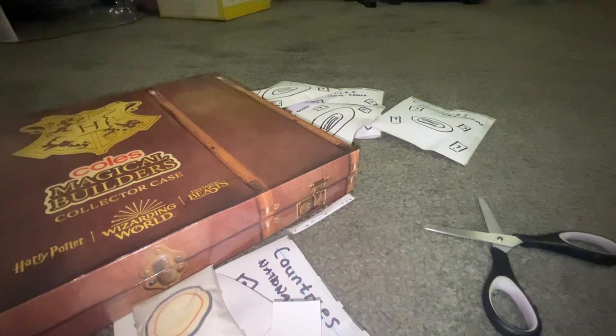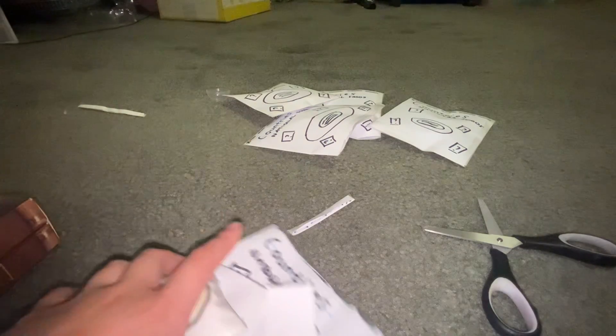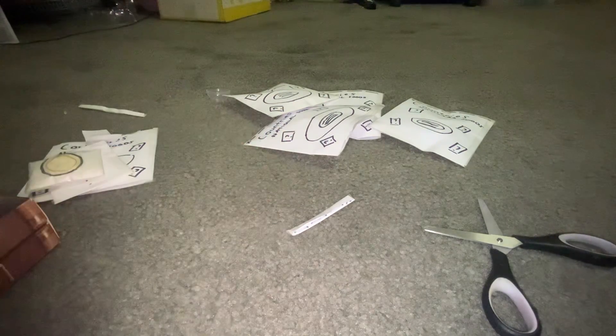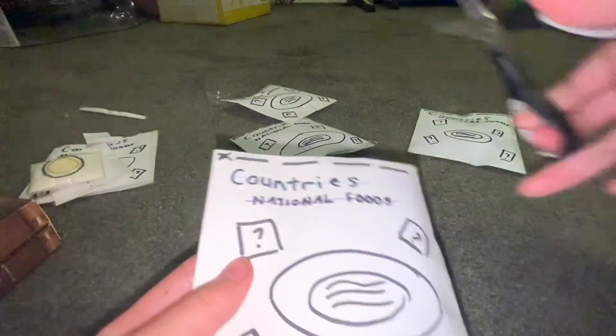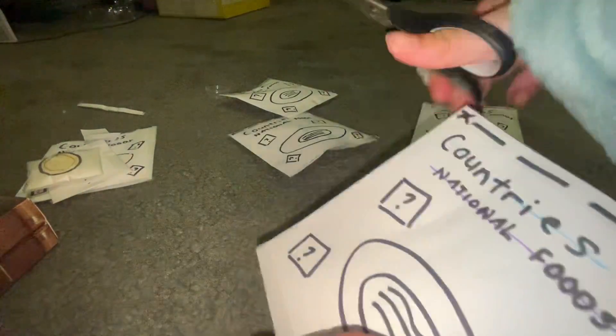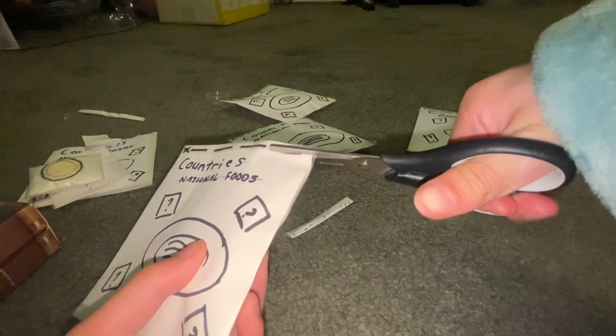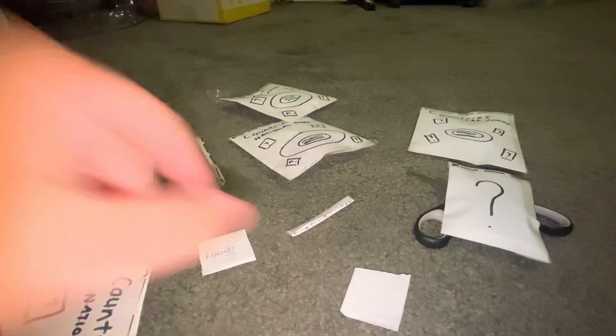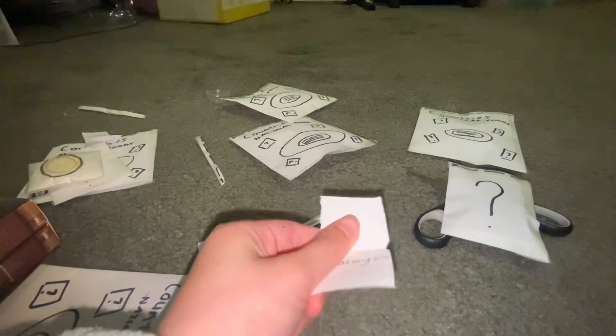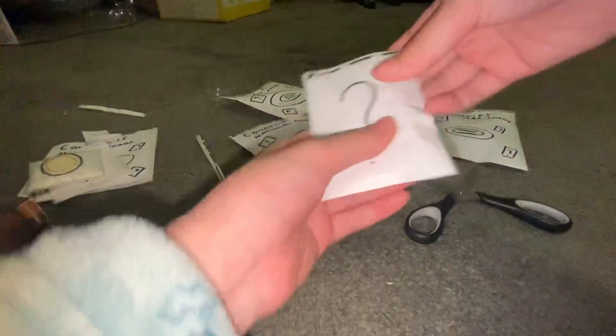This one right here. I really hope we get the asado, the fairy bread, or the wonton, or the fish amok from Cambodia. Let's see. Let's go open the second one. Hmm, this one. Okay, let's see what country we got. We got Malaysia.